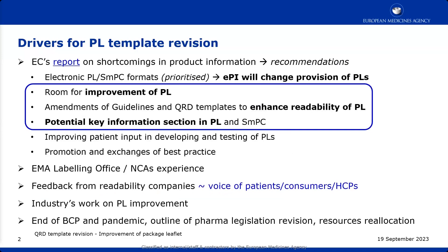What are the drivers of the revision? Why a revision now? As you may know from discussions over the past few years, there is the Commission's report on shortcomings in product information, issued in 2017. It concluded with several recommendations aimed at improving product information. The first one — electronic product information — was already prioritized and is ongoing, and that will have an impact on the provision of package leaflets. That recommendation was implemented shortly after the report was issued.